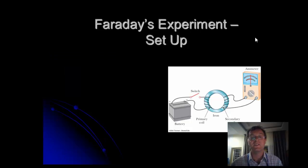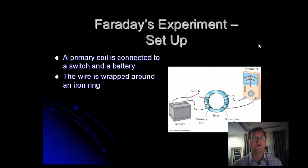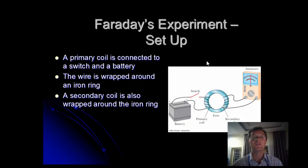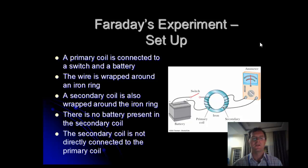Faraday had an experimental setup along these lines. He had a primary coil connected to a switch and a battery. The coil of wire was wrapped around an iron ring. Then he had a secondary coil also wrapped around the same iron ring. There was no battery present, but it was attached to an ammeter to see if any flow of current could be detected. The key thing here is that the secondary coil is not connected to the primary coil in any way.